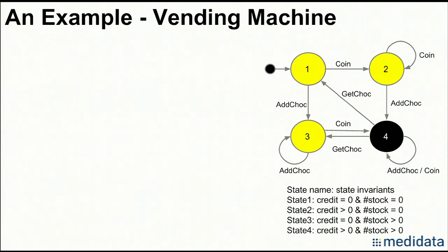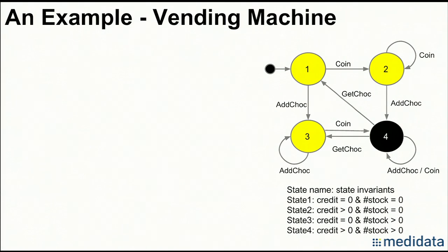This is a state machine diagram for a simplified vending machine system. State one is the first state when the vending machine system starts, and state four is the final state. There are three basic actions: service persons can add chocolates into the vending machine, customers can insert coins, and then buy chocolates. There are some constraints defined in this system — for instance, in state one, credit has to be equal to zero, and the number of chocolates in stock has to be equal to zero.